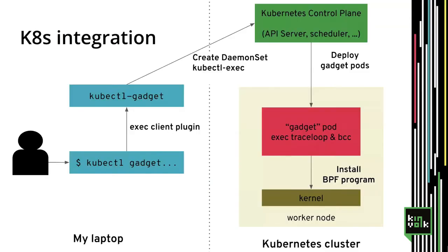The architecture looks like this: on your laptop you use kubectl-gadget, a kubectl plugin, which talks through the Kubernetes API — no SSH to nodes, using Kubernetes native concepts like pods and DaemonSets. Inspector Gadget deploys a pod on each node as a DaemonSet, each able to execute the different gadgets, running BPF programs in the kernel to gather information and send it back up to the kubectl-gadget CLI.